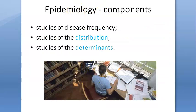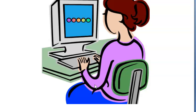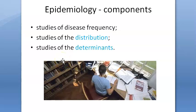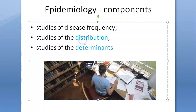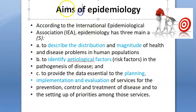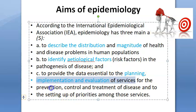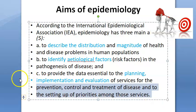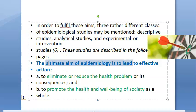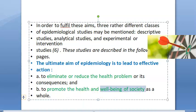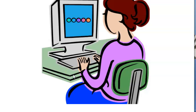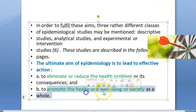Basically you are studying the cause of disease or a health state. Components are distribution, determinants, and frequency. Aims: describe distribution and magnitude of the health problem; identify etiological factors; plan, implement, and evaluate services to prevent, control, and treat diseases; and set priorities among services. The ultimate aim is to eliminate or reduce the health problem and its consequences and to promote health and well-being of society as a whole.